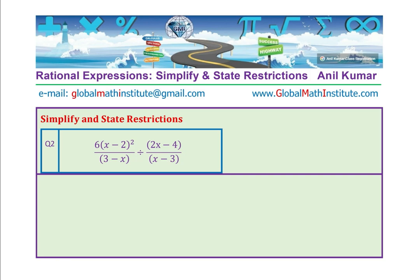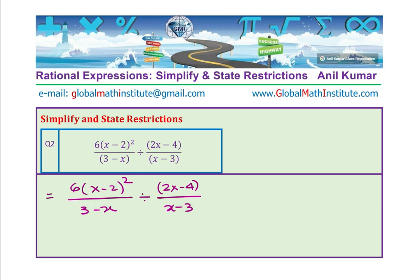Now let us take the second example. Factors are already given to us. Whenever it is division, we write it as multiplication using the reciprocal. So we write 6 times (x minus 2) squared over (3 minus x), times (2x minus 4) over (x minus 3). Notice that 3 minus x and x minus 3 are negatives of each other — it is good practice to take the negative common, so 3 minus x can be rewritten as minus (x minus 3).